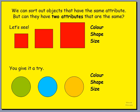So now that we've found out how to sort objects that have the same attributes, the question for this video is: can objects have two attributes that are the same? Not just one thing, but can they have two things that are the same about them? Let's take a look.